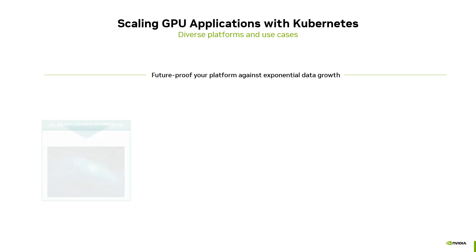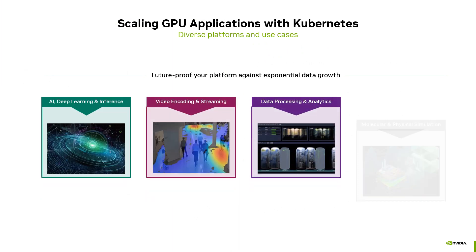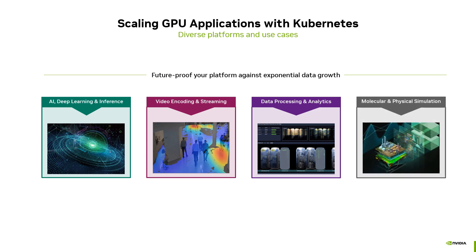Every industry uses AI. Our ability to collect data has led to revolutionary advances for AI applications using deep learning and inference. But the amount of data we are collecting for these applications is growing exponentially and can overwhelm a server's ability to process it. This is why AI needs acceleration, and NVIDIA GPUs and SmartNIX future-proof your platform against exponential data growth.